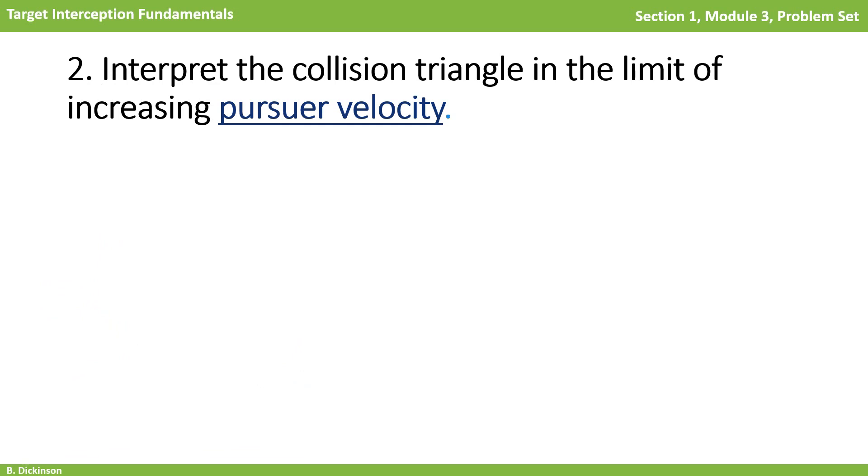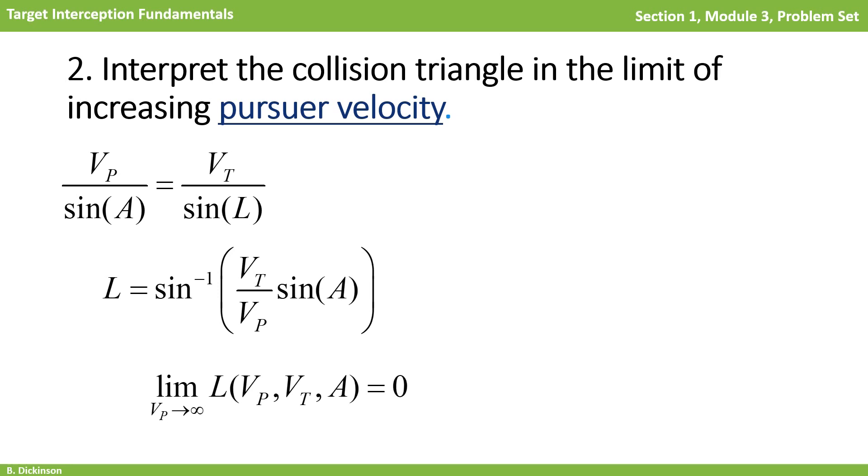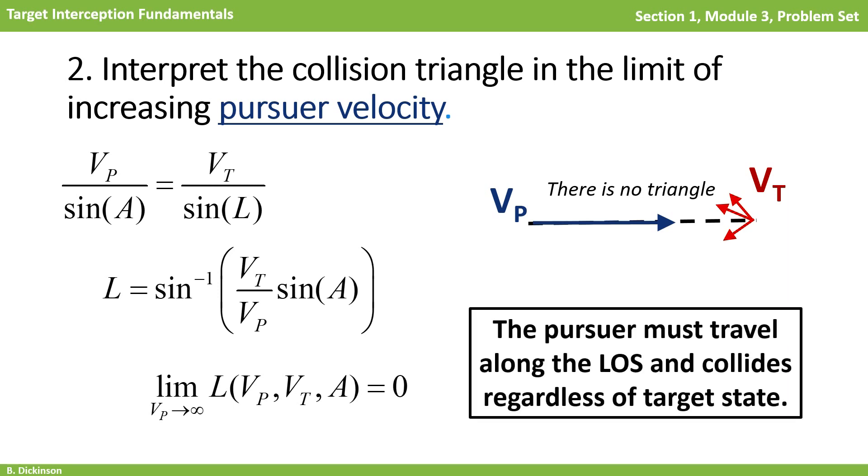For problem two, let's go back to the law of sines. Solve for the lead angle so that the pursuer velocity is in the denominator. Then, we can take the limit as VP goes to infinity. The lead angle is zero. Essentially, regardless of the range, target speed, or target heading, the pursuer travels infinitely fast directly along the line of sight. There is no collision triangle.